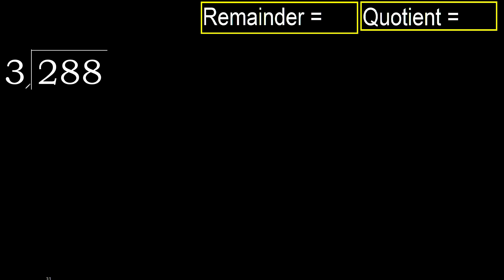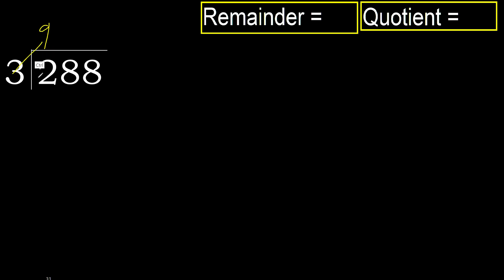288 divided by 3. 2 is less, therefore next 28. 28 is not less. With 28, 3 multiplied by which number is nearest to 28 but not greater? 3 multiplied by 9 is 27. 27 is not greater.